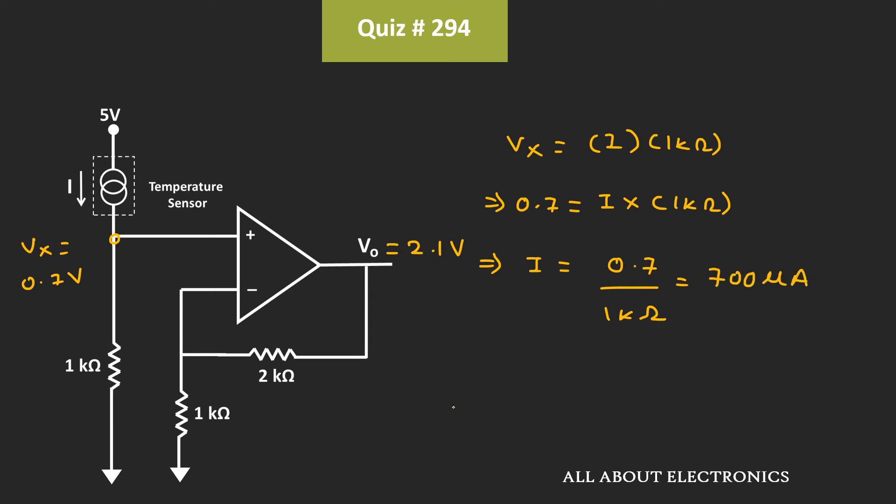And here, we have been also given the relationship between the temperature and the current which is flowing through this temperature sensor. That is, I is equal to 2T μA, where this T is in the Kelvin. So from this, we can say that, the temperature of this hot air in the Kelvin is equal to I divided by 2. That is equal to 350 K.